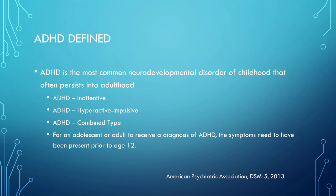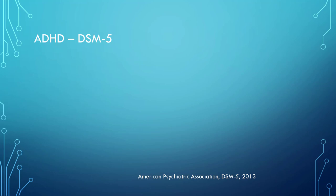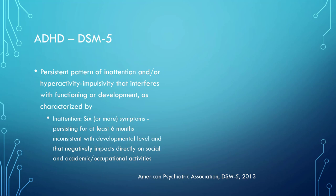For an adolescent or adult to receive a diagnosis of ADHD, the symptoms need to have been present prior to the age of 15. According to the DSM-5, ADHD is a persistent pattern of inattention and/or hyperactivity-impulsivity that interferes with functioning or development, characterized by inattention with six or more symptoms persisting for at least six months, inconsistent with the developmental level of the child, and that negatively impacts directly on social, academic, or occupational activities.